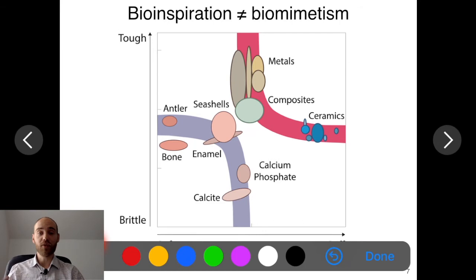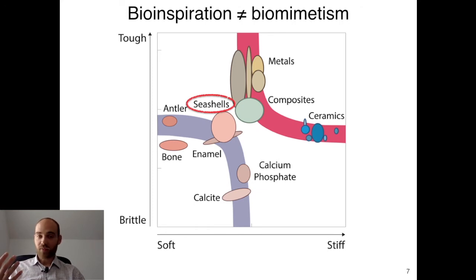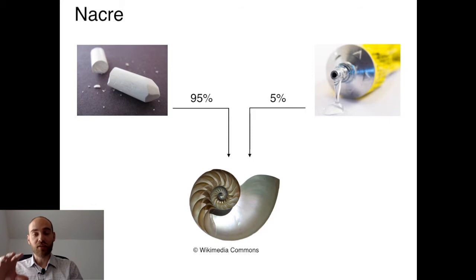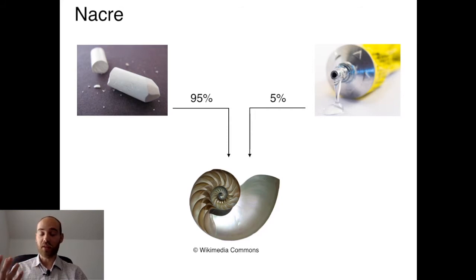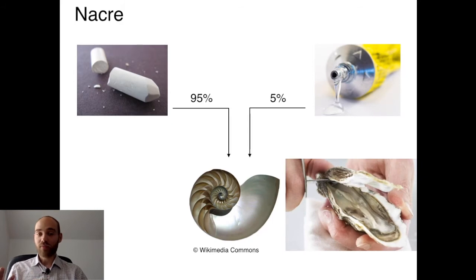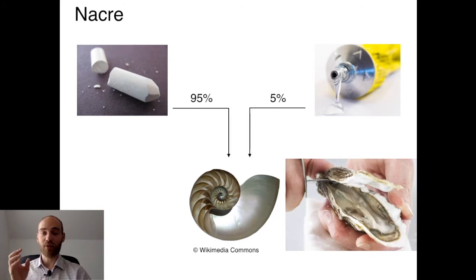We're going to look at seashells as an example to understand where this improvement comes from. The main constituent of a seashell is called nacre, and if you look at its composition it is 95% chalk — calcium carbonate — and 5% of a protein that is basically just a glue, similar to any synthetic glue you can find. However, because of the way these two components are arranged at a very fine scale, you get an extremely tough material.